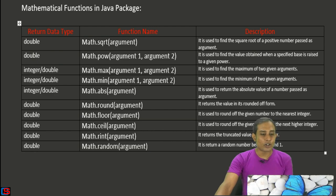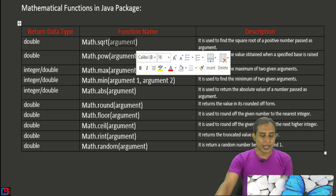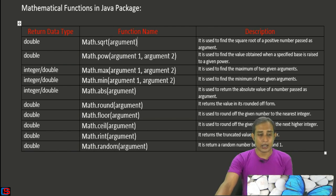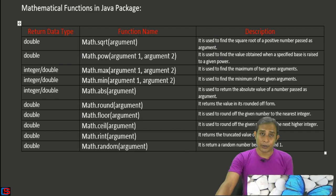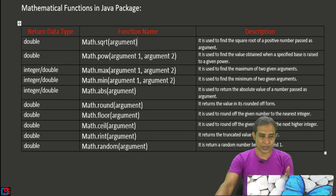The first function is math.sqrt. In math.sqrt it takes a single argument — the value passed here may be in integer format or double format. It returns the square root of that particular number. No string or character value can be used as an argument in any of these functions. In math.sqrt, it always returns a double data type value.